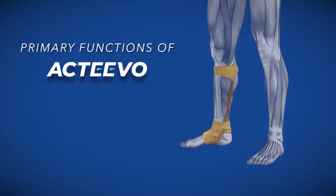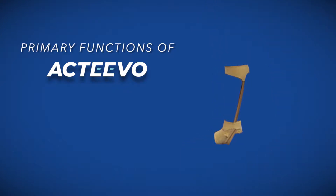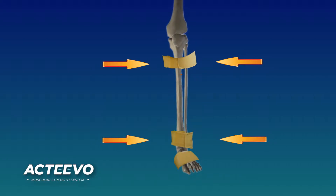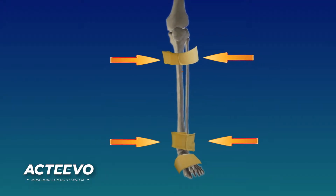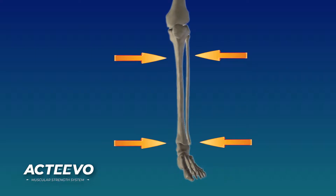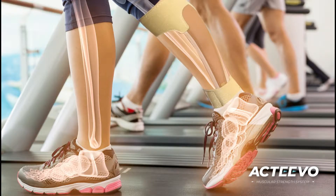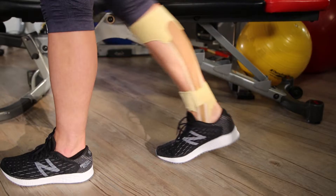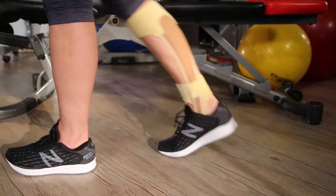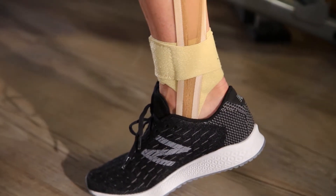Activo has two primary functions. The main function is creating stability in the joint — on the tibiofibular joint, both proximal and distal — by supporting the ligamentous area. The secondary function is the most exciting one: using the principle of neuroplasticity to retrain muscle function while the person is performing an activity using an external contractile piece.